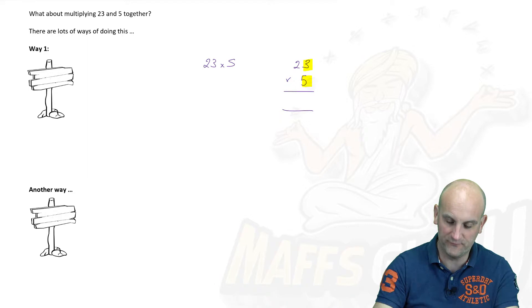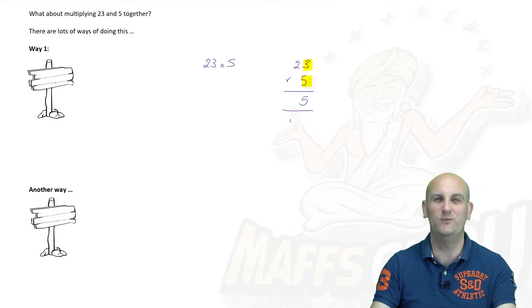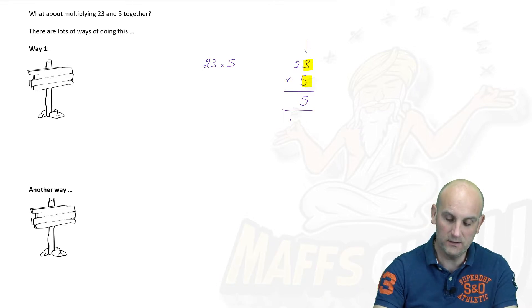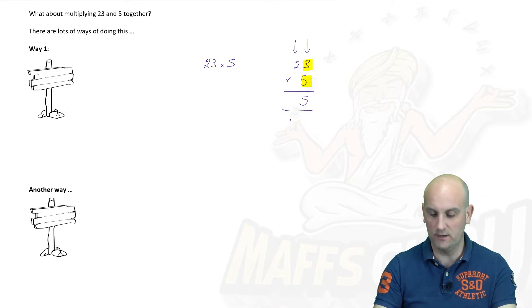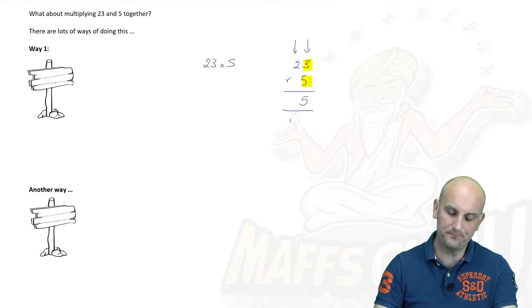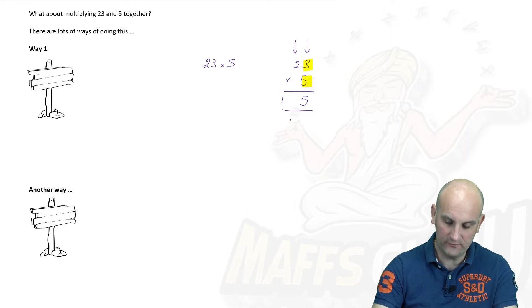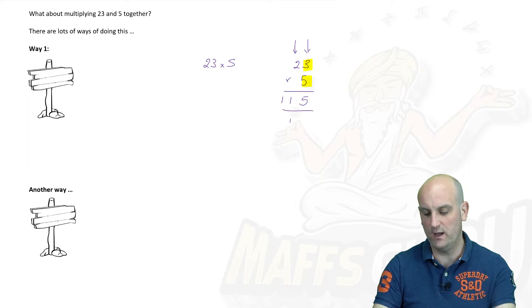And we know that 5 times 3 is 15 and for some random reason we put the 5 there and we put the 1 down there. Now it's not a random reason because 5 was the units which is going to go in my units column and 1 was the tens which is going to go in my tens column. Having done that we then move and we do 5 times 2 which is 10 and we add the 1 which gives me 11. So 23 times 5 is 115.